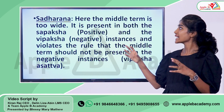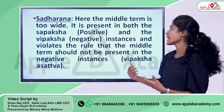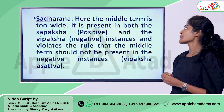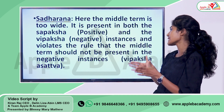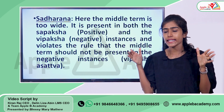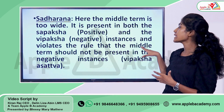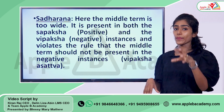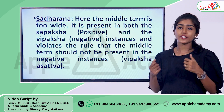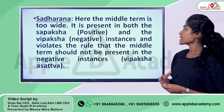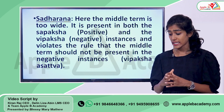In Sadharan, the middle term is too wide. The error is that the middle term is present in both the sapaksha — that is positive instances — as well as the negative instances, violating the rule that the middle term should not be present in the negative instances. A valid middle term should be present in positive instances and absent in negative instances, but here it is present in both.